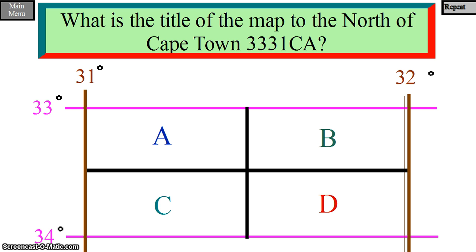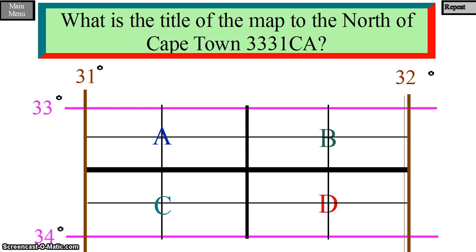Subdivide each of the 4 quadrants into 4 smaller quadrants. Also label the smaller quadrants A, B, C, and D respectively.